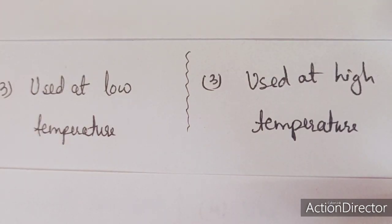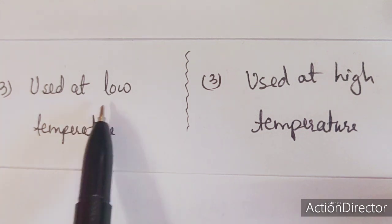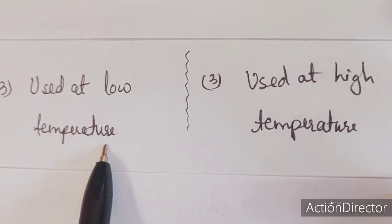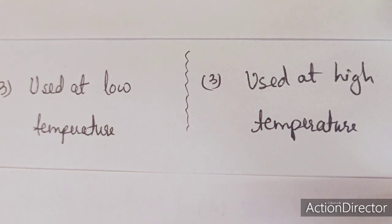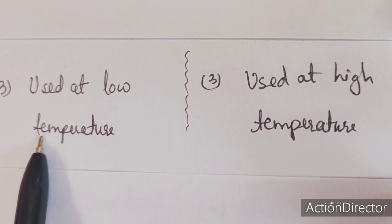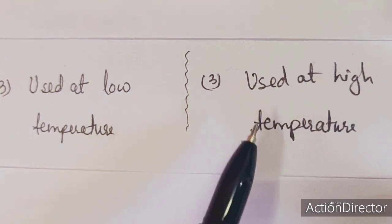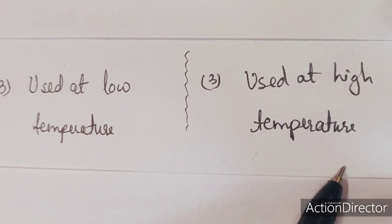The next point of difference: homogeneous catalysts can be used at low temperature because at higher temperatures they can be unstable. They are temperature sensitive. But heterogeneous catalysts can be used at higher temperatures.